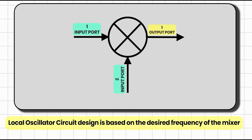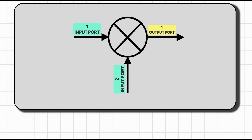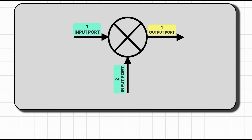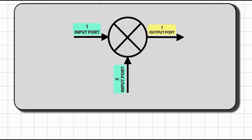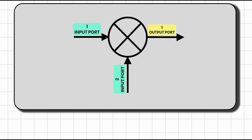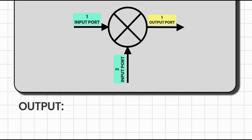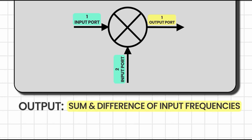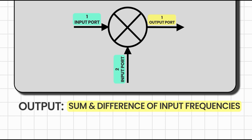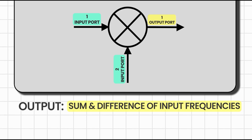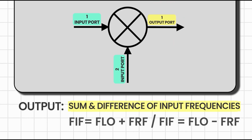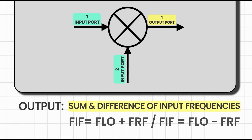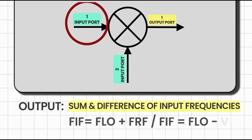We will talk about the local oscillator in detail when we design the circuit. The third port is an output port, denoted as the intermediate frequency (IF) output. From our port discussion, the output of the mixer will be the sum and subtraction of the input frequencies: FIF = FLO ± FRF, where FIF is the IF port frequency, FLO is the local oscillator frequency, and FRF is the RF frequency.